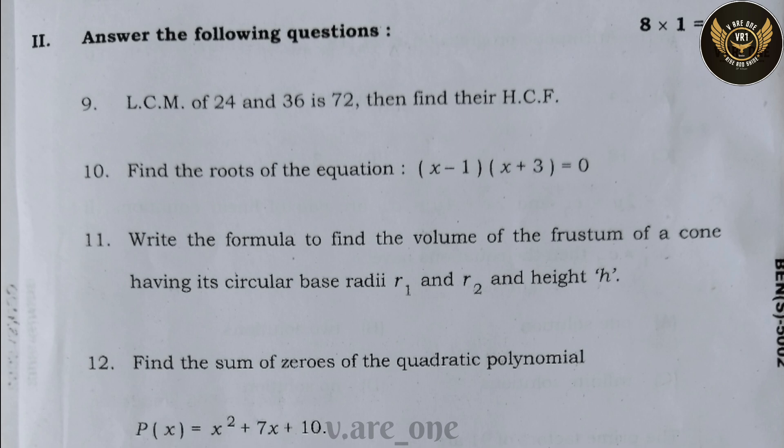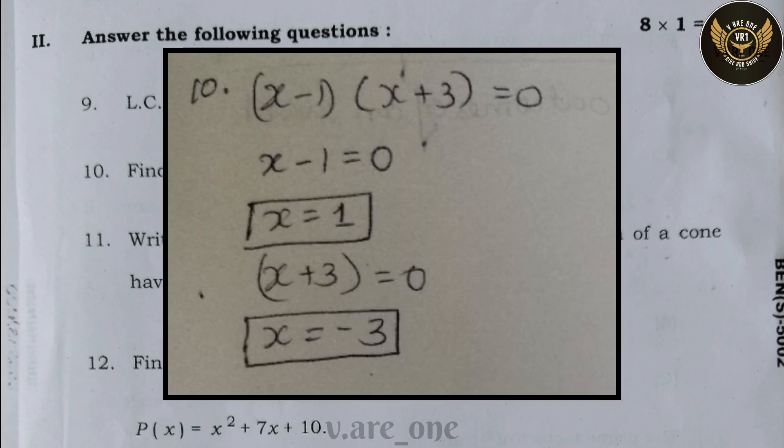The correct answers are x = 1 and x = −3. Since negative values can't be zeros of the equation in this context, x = 1 is the correct answer.